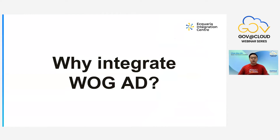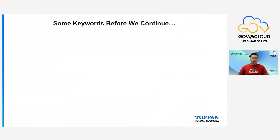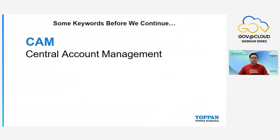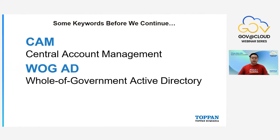First, why integrate to WOG AD? Let me explain some key acronyms. CAM is the Central Account Management which GovTech is implementing — its purpose is to centrally manage users and groups of systems integrated to it. WOG AD is the Whole of Government Active Directory, which stores all user accounts and credentials centrally for authentication. When a person joins the civil service, an account is created for them in WOG AD.